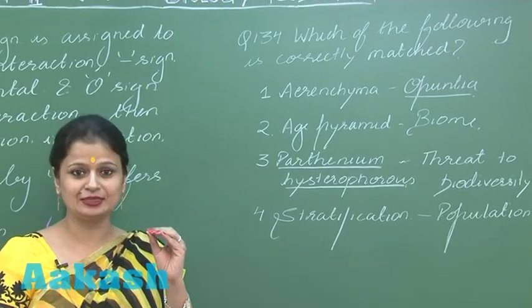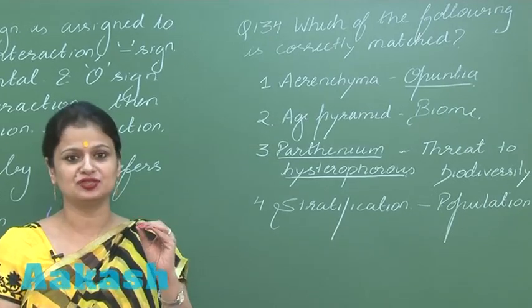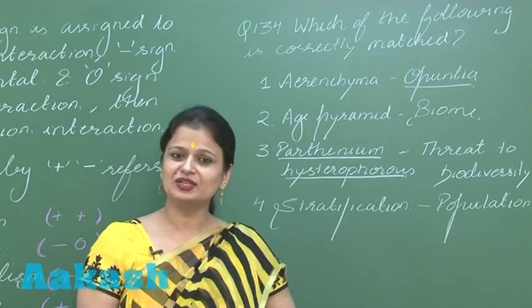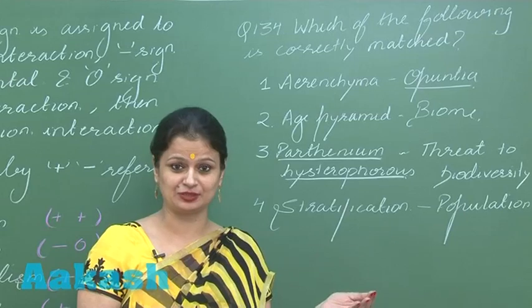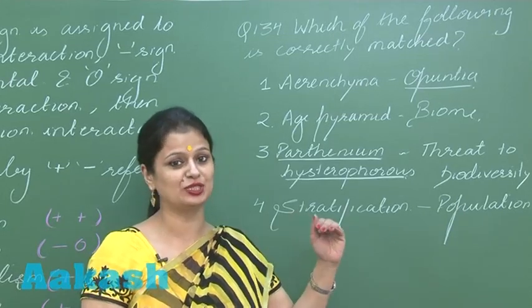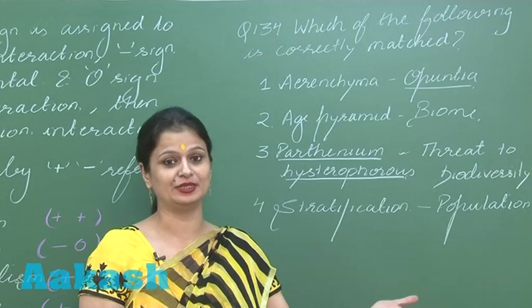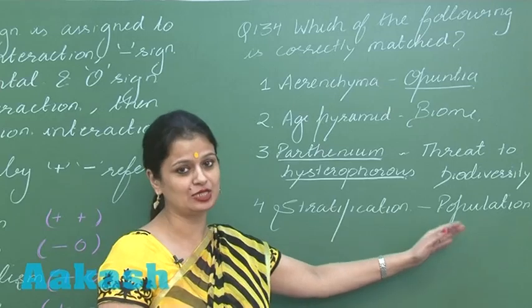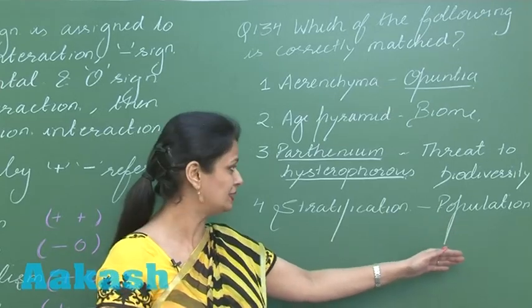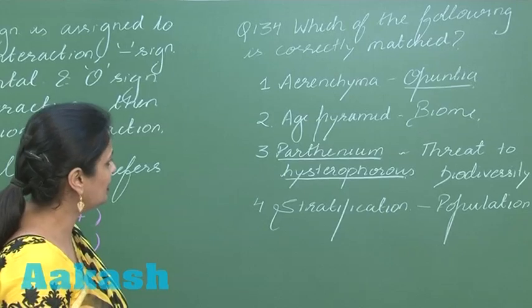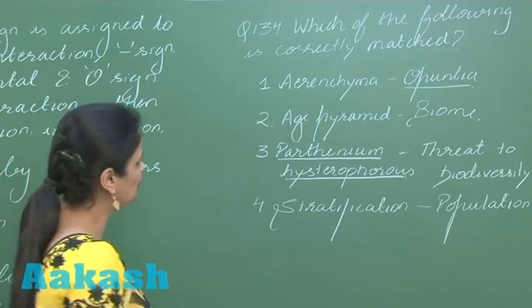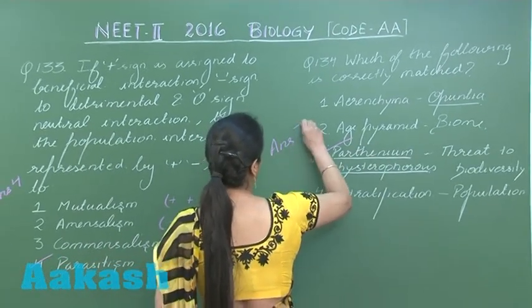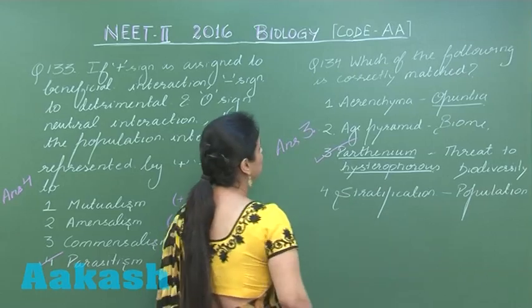Parthenium is an exotic weed posing a threat to indigenous species, so that match is correct. Stratification refers to the vertical layer formation of vegetation in a community — but here stratification is given for population, which is wrong; it should be for community. So the right option is option number 3 — the exotic alien weed, Parthenium.